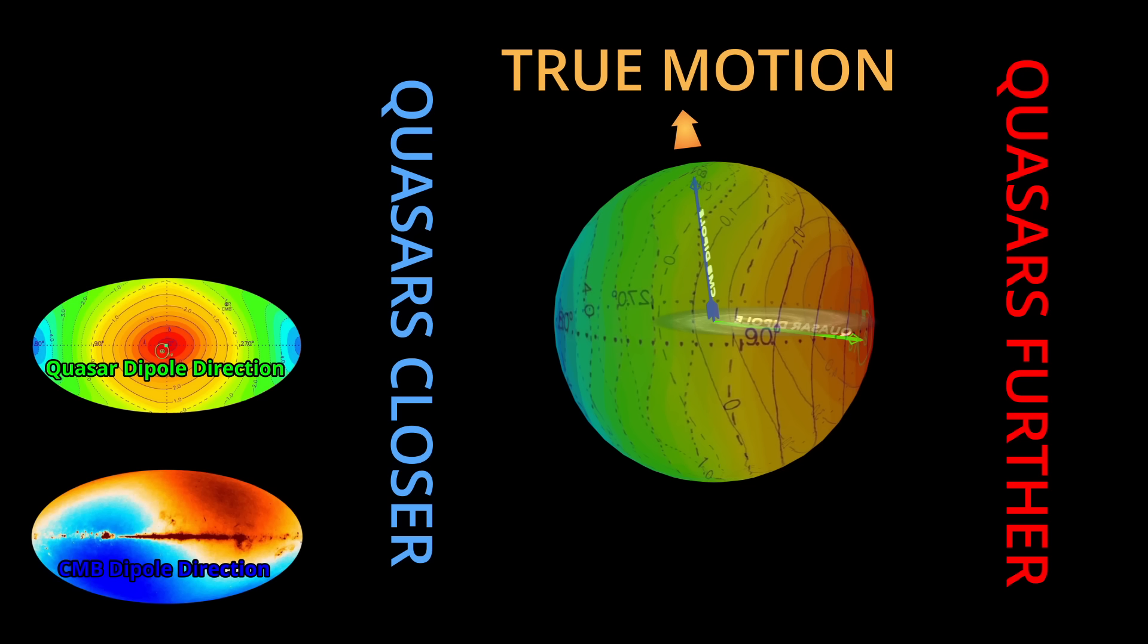The problem is twofold. First, it's hard to see why this difference would divide the sky along such a clean axis. And second, if the CMB dipole really is our motion, then that same motion should be visible in the quasar spectra as well. Yet the study shows it's not.